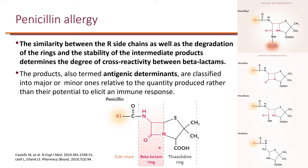When we look at the structure of penicillins, there is the beta-lactam ring, and for penicillin there's also a second ring fused to it. More importantly, there is a side chain — an R1 side chain — that differs depending on which penicillin. This will be metabolized into by-products labeled as major or minor determinants. The similarity between the R side chain as well as the degradation of the ring and stability of intermediate products determine the degree of cross-reactivity between beta-lactams.